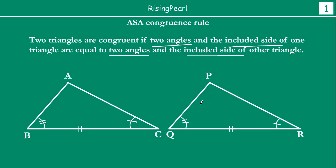When two triangles are congruent, geometrically speaking, we know that all their corresponding angles are equal. So if triangle ABC is congruent to triangle PQR, it means angle A equals angle P, angle B equals angle Q, angle C equals angle R, and the corresponding sides are equal: AB equals PQ, AC equals PR, and BC equals QR. So we are starting to look at different congruence rules and trying to find out how we can prove them.